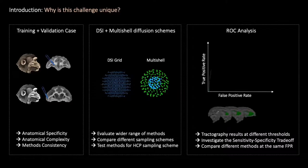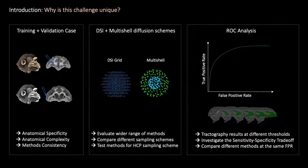We asked participants to upload tractography results obtained at multiple thresholds so that for each tractography volume true and false positive rates were computed by voxel-wise comparison to the tracer data. This allows us to better investigate the sensitivity specificity trade-off and compare different methods at the same false positive rate threshold.